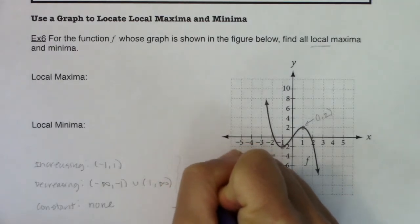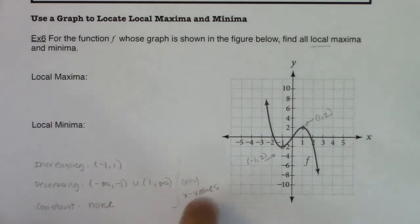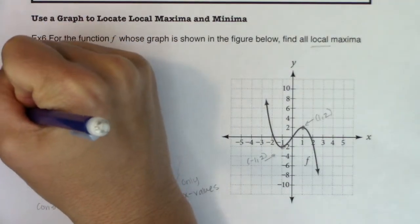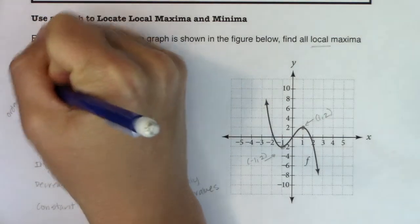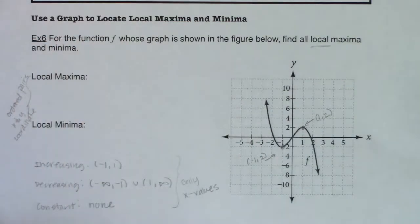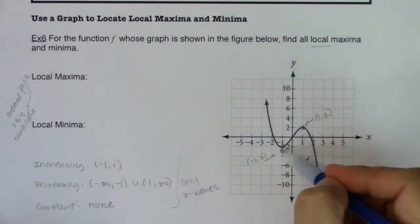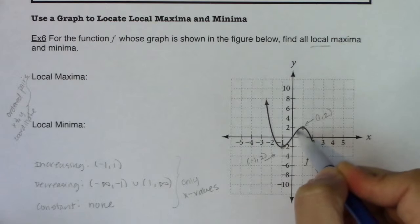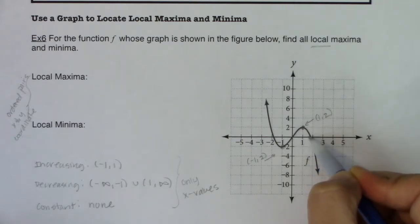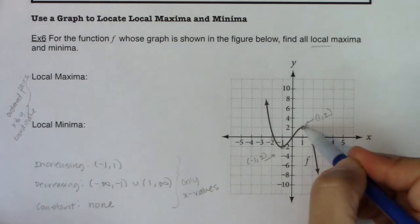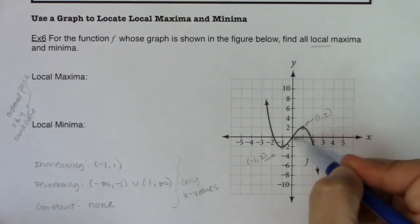I want to contrast increasing/decreasing intervals with local maxes and mins. For increasing and decreasing intervals we only report x values. But for local maxes and mins, these are ordered pairs — you owe me both an x and a y coordinate. So I went decreasing, increasing, decreasing, and we see a local max at the peak. I call it 'local' because close to points around it — say anywhere from x equals zero to x equals two — this is the high point, with nothing higher than y equals two nearby.